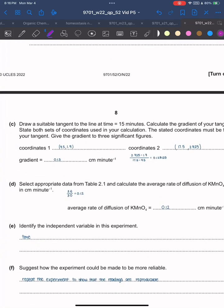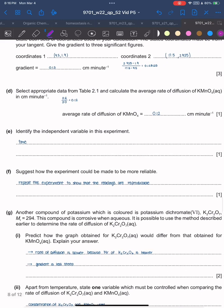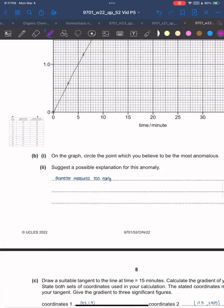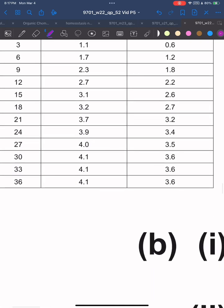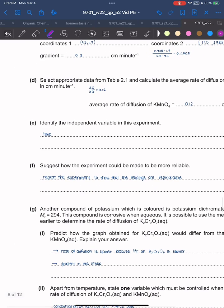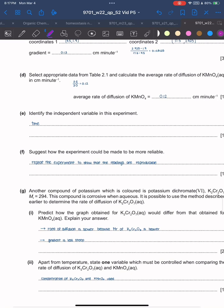Select appropriate data from Table 2.1 to calculate the average rate of diffusion. You have to use the ones at the end, so do 3.6 over 30. Identify the independent variable - it's self-explanatory: time.